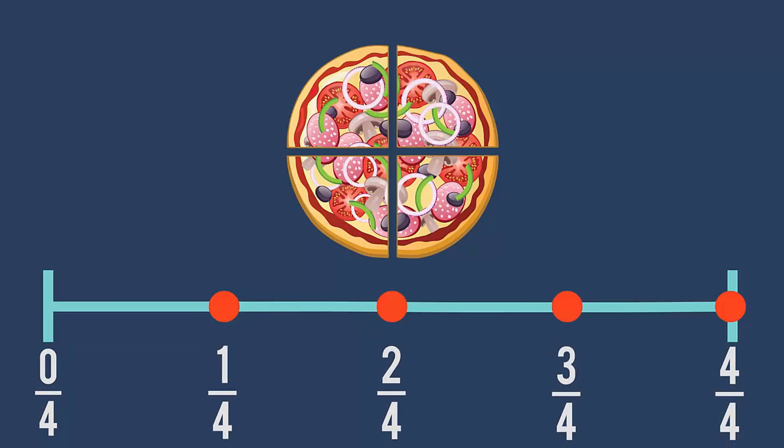These are our fractions on the number line. Starting over here, I have one of four equal parts, then two of four equal parts, next three of four equal parts, and finally our copycat one, four over four equal parts.